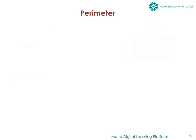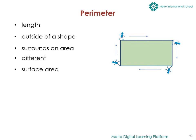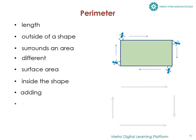The parameter is the length around the outside of a shape or the path that surrounds an area. This is different from the surface area — the surface area is how much space is inside the shape. We find parameter by adding together the length of all of the shape's sides.